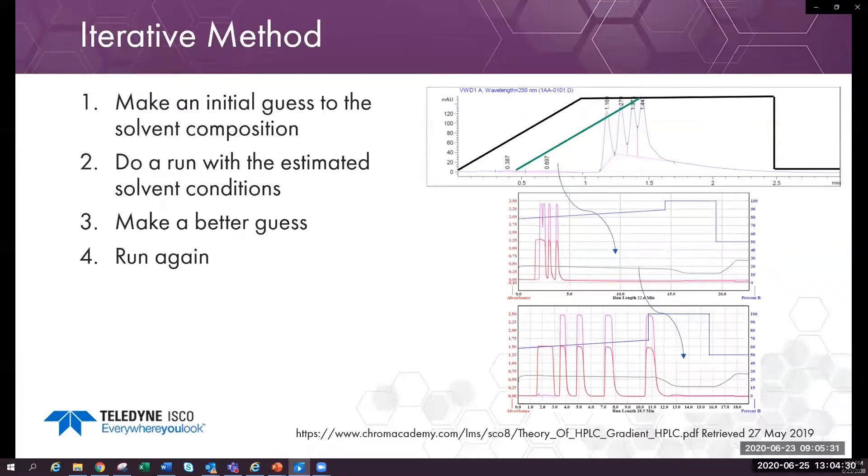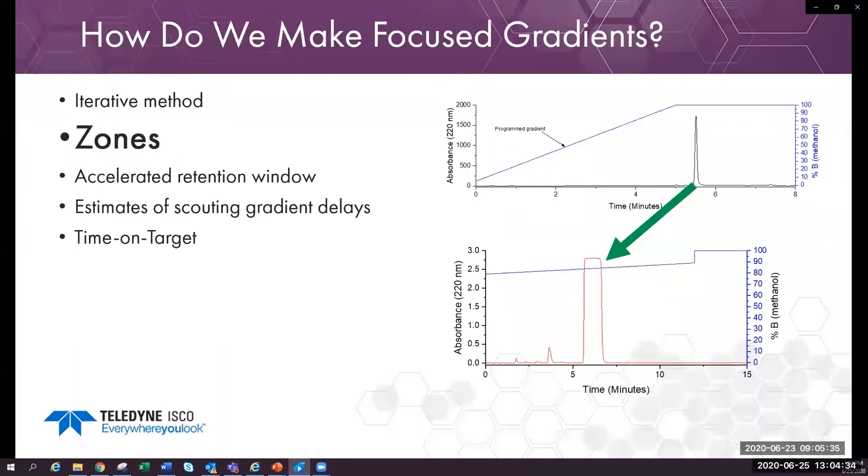You're running on a preparative column, so you need more sample. The rest of the methods to be discussed can use an analytical column to create the scouting run, so they don't need much solvent or samples. They do need columns that match.